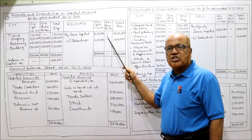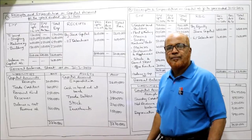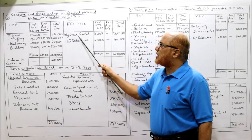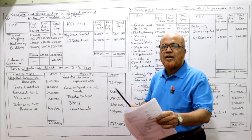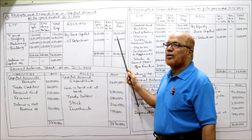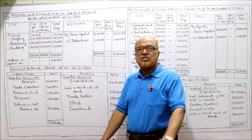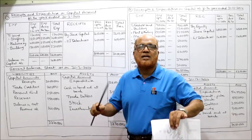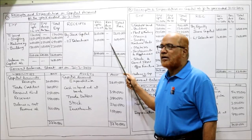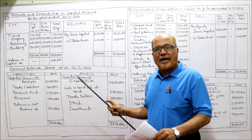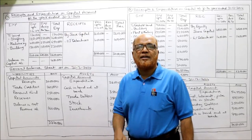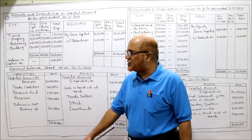Similarly, the receipts side has three columns: receipts at the beginning of the year (1st April 2009), receipts during the year, and total receipts. The first item on the receipts side is subscribed capital — by share capital 26 lakh at the beginning of the year; no shares were issued during the year, so 26 lakh in the total column. Second item: 11% debentures 4 lakh — a fixed capital fund — shown on the receipts side, 4 lakh beginning, nil during the year, total 4 lakh.